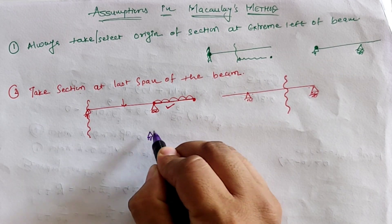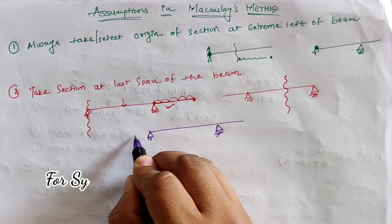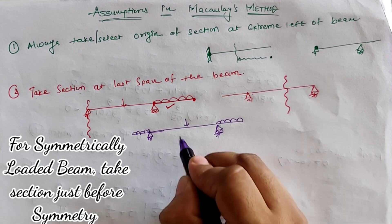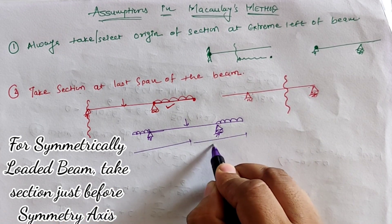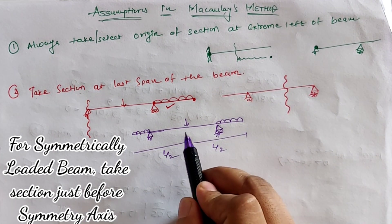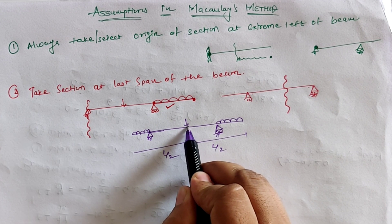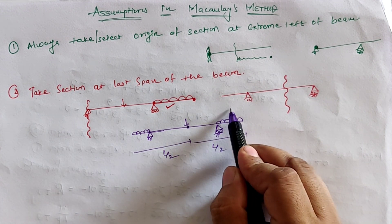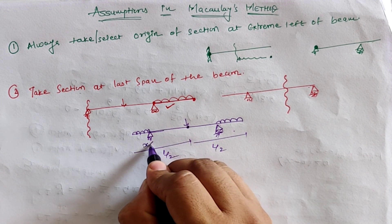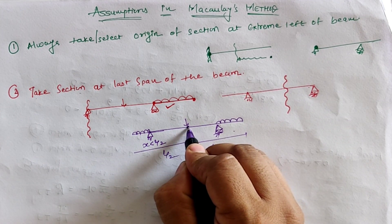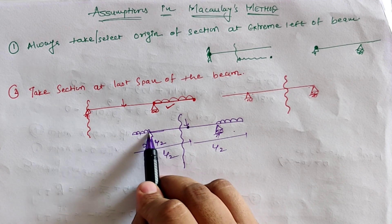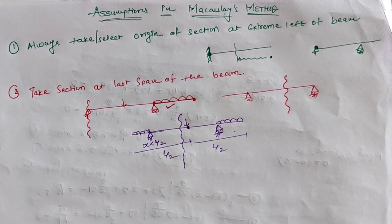If we have a symmetric beam which is loaded symmetrically — that is, loading is similar at L/2 distances — then we have to select a section just before the point of symmetry. Rather than taking the section in the last span, we select a section which must be less than L/2, just before the symmetricity. So our section is in between the simply supported end and this section of symmetricity.